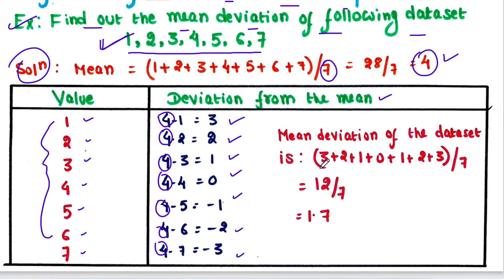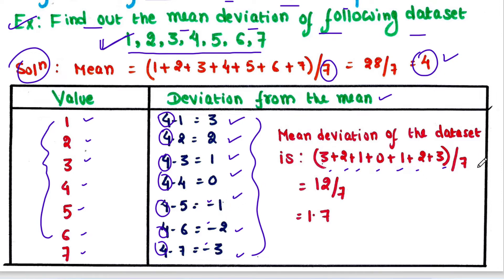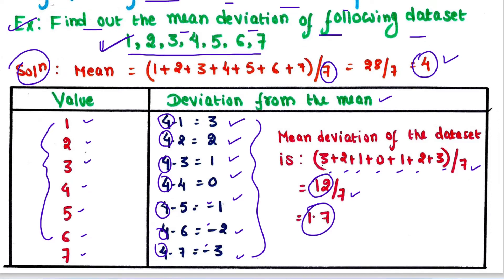Now to find the mean deviation of the data set, we will add these values: 3 plus 2 plus 1 plus 0 plus 1 plus 2 plus 3. We have to ignore the minus sign here. Then we will divide the total, which is 12, by the total number of values, which is 7. So the answer is 1.7. This is how we calculate mean deviation.